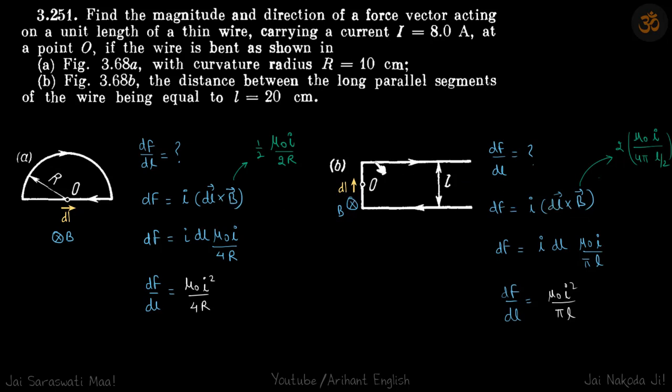But here the field is due to these two semi-infinite wires. The magnitude and direction are both the same because of both, and its magnitude becomes 2 times μ₀i by 4π times l by 2, the half length which is l by 2. Put it here and you will get df by dl is μ₀i² by πl, which is our answer.